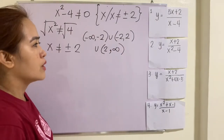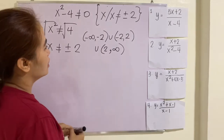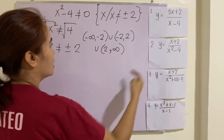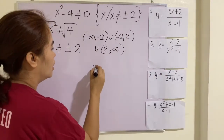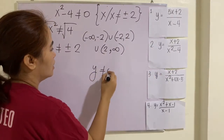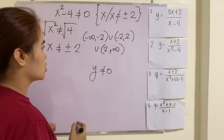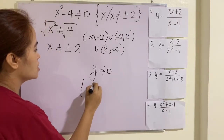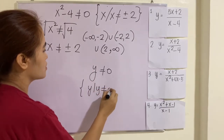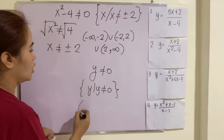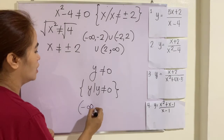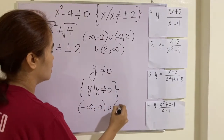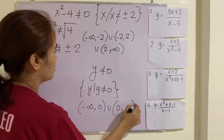In finding the range: if the degree of the numerator is less than the degree of the denominator, the range is y is not equal to 0. In set notation, this is y such that y is not equal to 0. In interval notation, negative infinity, 0, union 0, positive infinity.